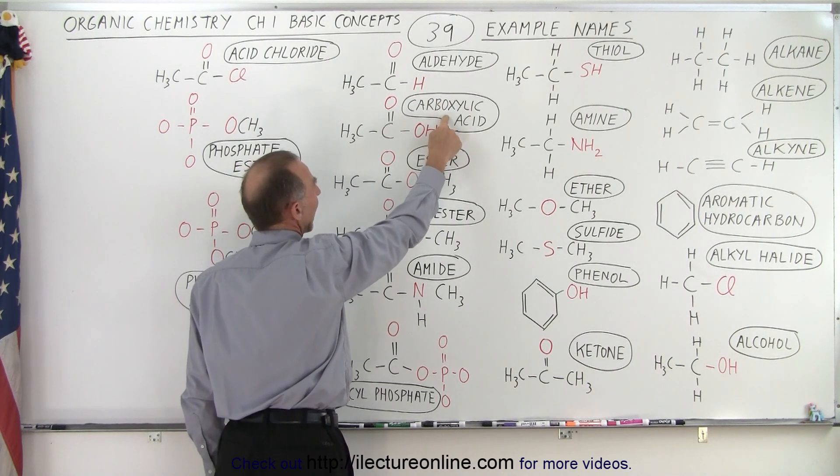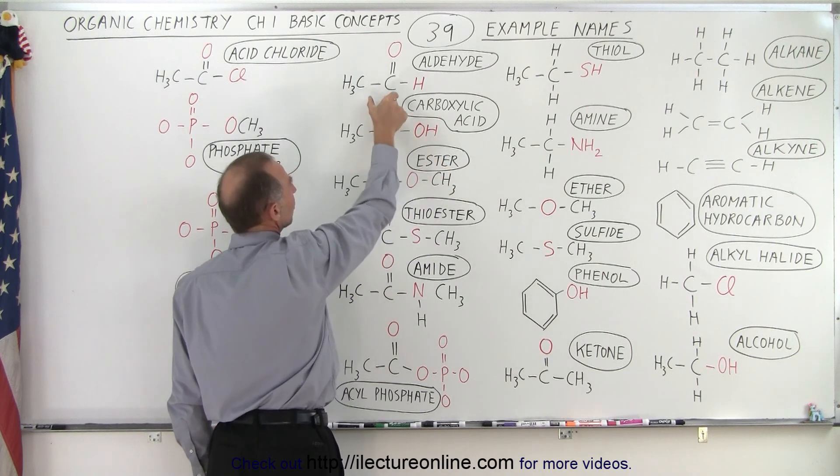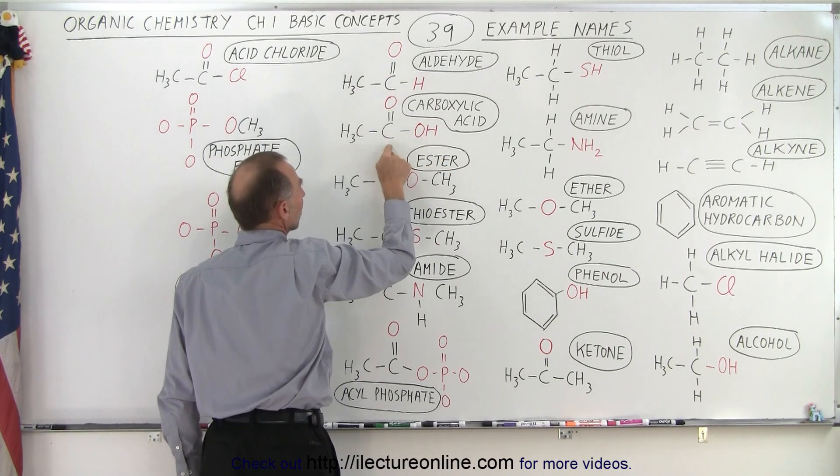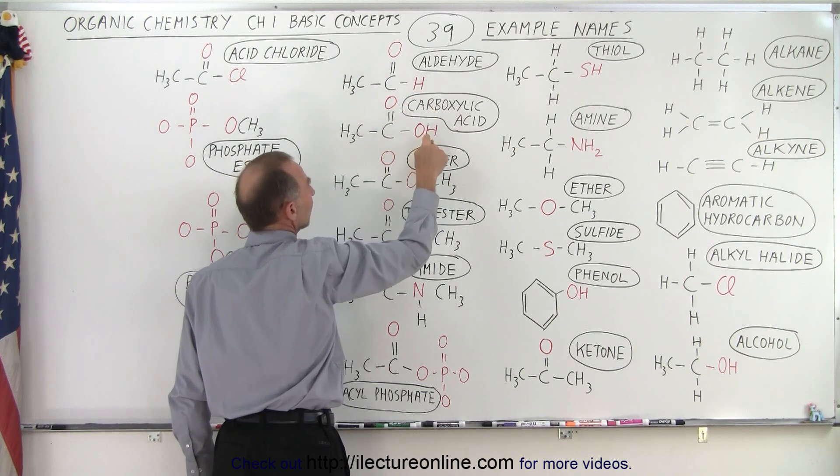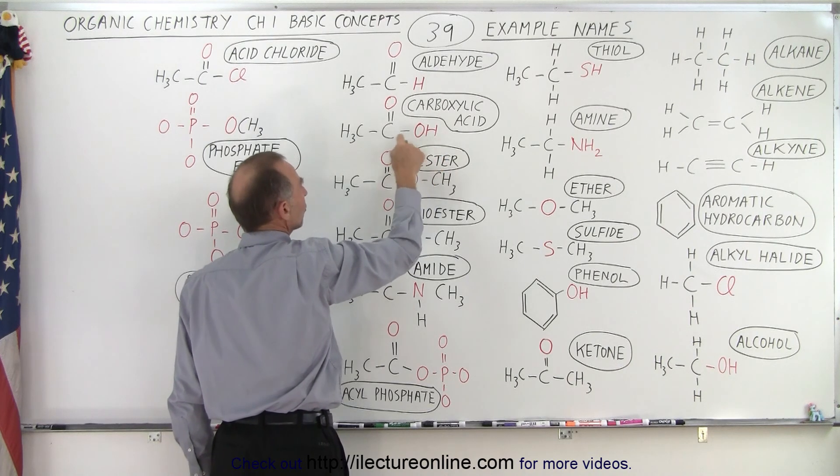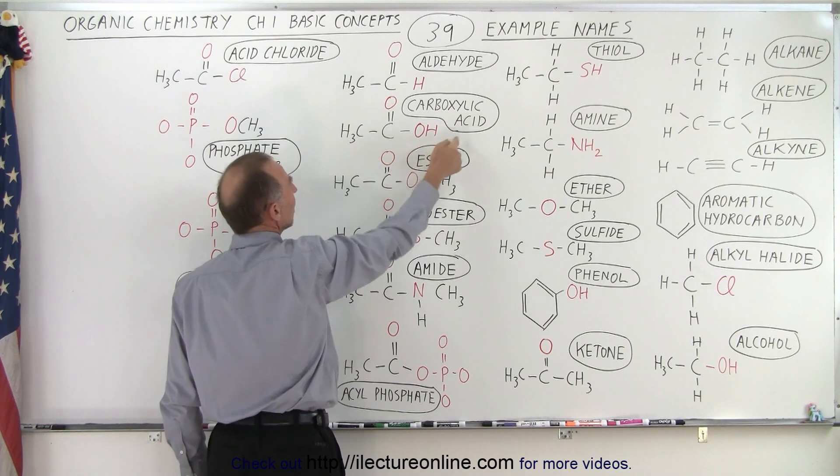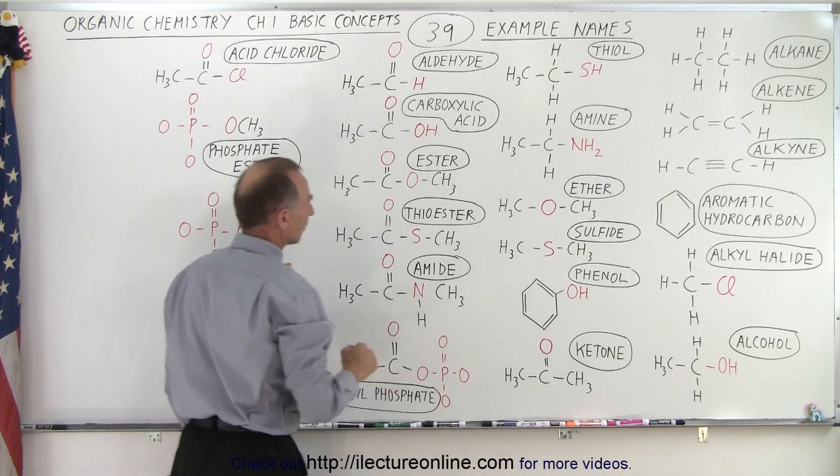Here we have a carboxylic acid, which means we have an oxygen double bond to the last carbon. But instead of hydrogen we have the hydroxyl group OH attached to the same carbon at the end of the chain, which makes it an acid.